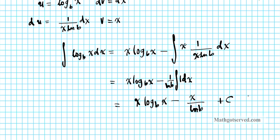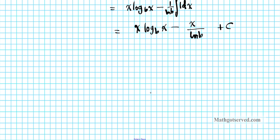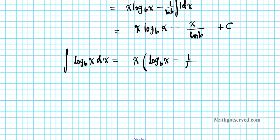That's the antiderivative. Let's factor it to look a little better: the integral of log base b of x dx equals x times the quantity log base b of x minus 1 over ln b, plus C.